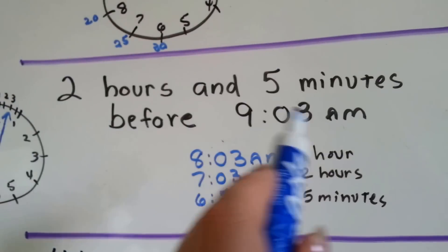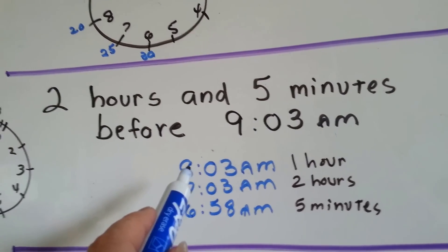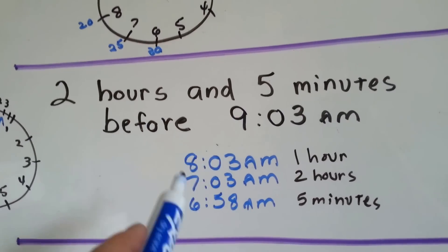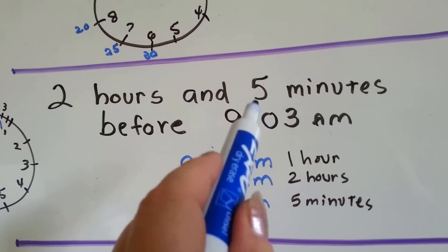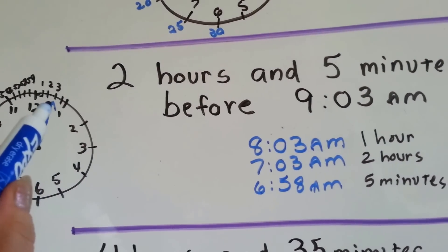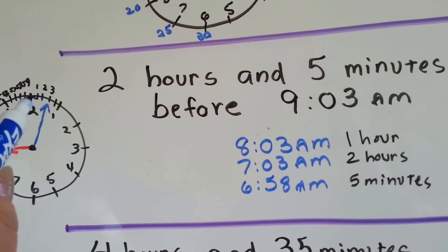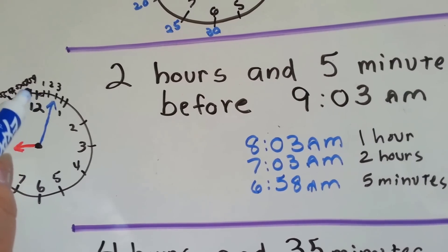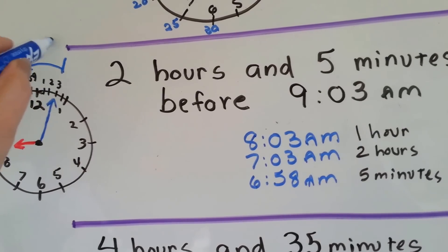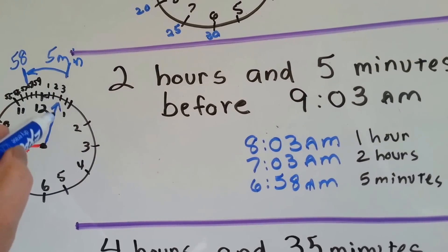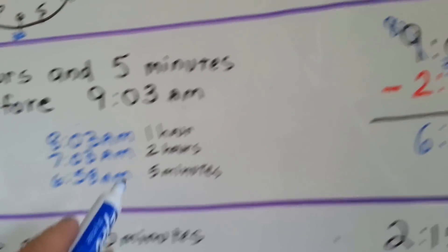Now let's look at the clock way: 2 hours and 5 minutes before 9:03 AM. Well, 1 hour before 9:03 AM would be 8:03 AM. Another hour back and it would be 7:03 AM. So now we've got 2 hours taken away. We've got to take away the 5 minutes from 7:03 AM — 7:02, 7:01, 7:00. That's 3 minutes. We need to take 2 more minutes to have 5, and it goes to 59 and then 58. Because there are 60 minutes in an hour, we're at the 3-minute mark, and if we go back 5 minutes, we're going to be at the 58 mark. That's what made it 6:58 AM — the same thing we got from the calculation.